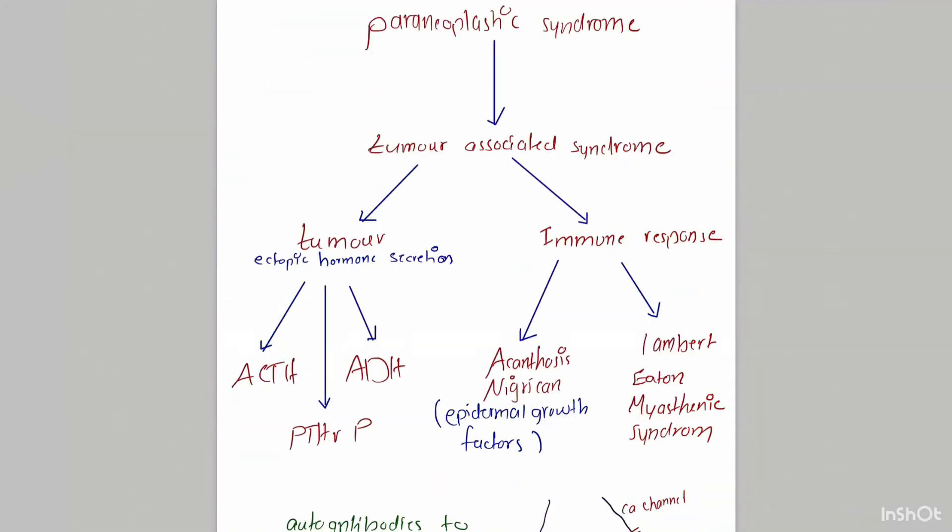Regarding paraneoplastic syndrome or tumor-associated syndrome, it is a group of signs and symptoms resulting from either the tumor itself or immune response against the tumor. For example, if we have a small cell lung cancer and this cancer secretes antidiuretic hormone (ADH), this ADH will cause water and sodium retention. Water and sodium retention caused by ectopic ADH secretion from small cell lung cancer is considered a paraneoplastic syndrome.